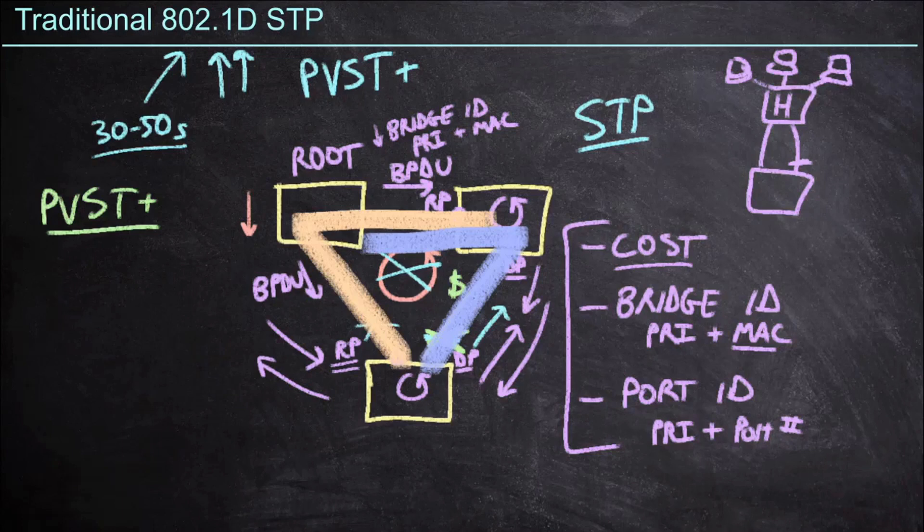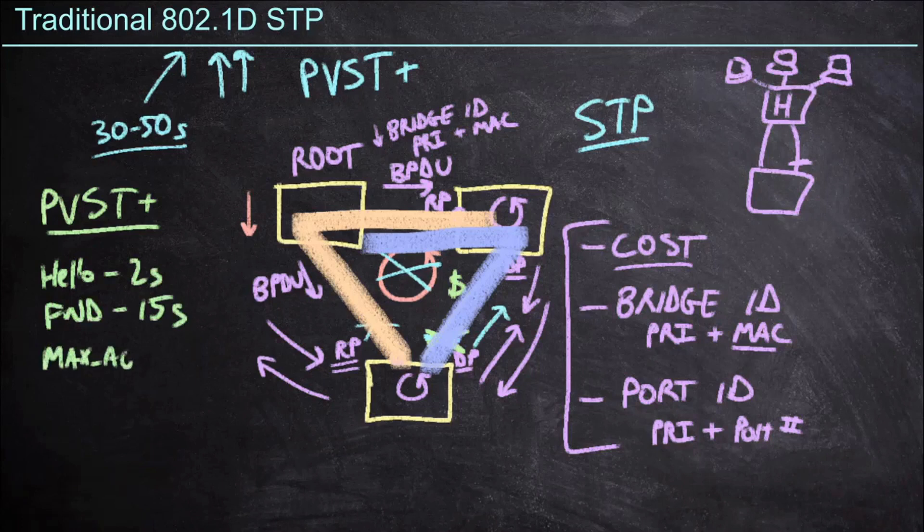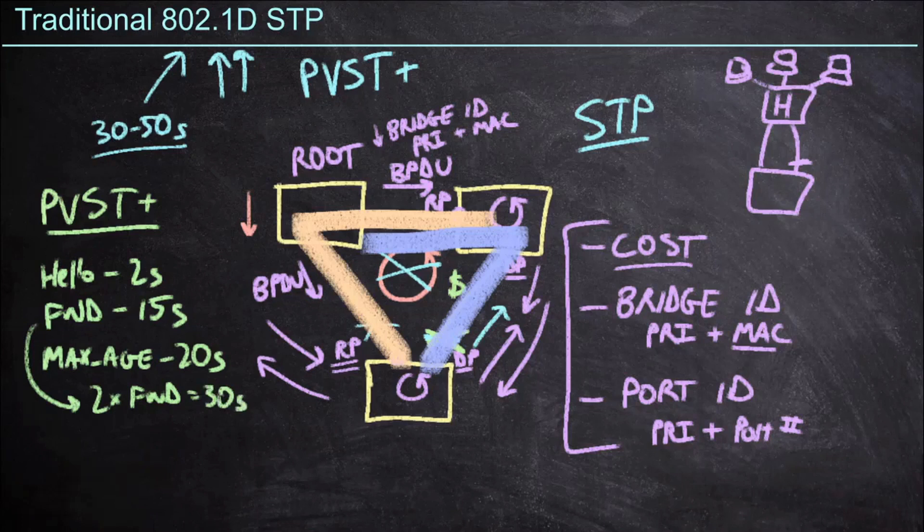When it comes to Spanning Tree, we talk a lot about these timers. We have the hello timer, that would be 2 seconds by default. We have the forwarding delay, that would be 15 seconds by default. And then we also have max age, which is 20 seconds by default. When we bring up a new port, we do two times the forwarding delay in order to bring up an interface because we have to go through these different states in Spanning Tree, such as listening and learning states. That ends up being 30 seconds that it takes to bring a port online. That is a long time once I plug a device in to wait 30 seconds to have network access. That's not really the best scenario.